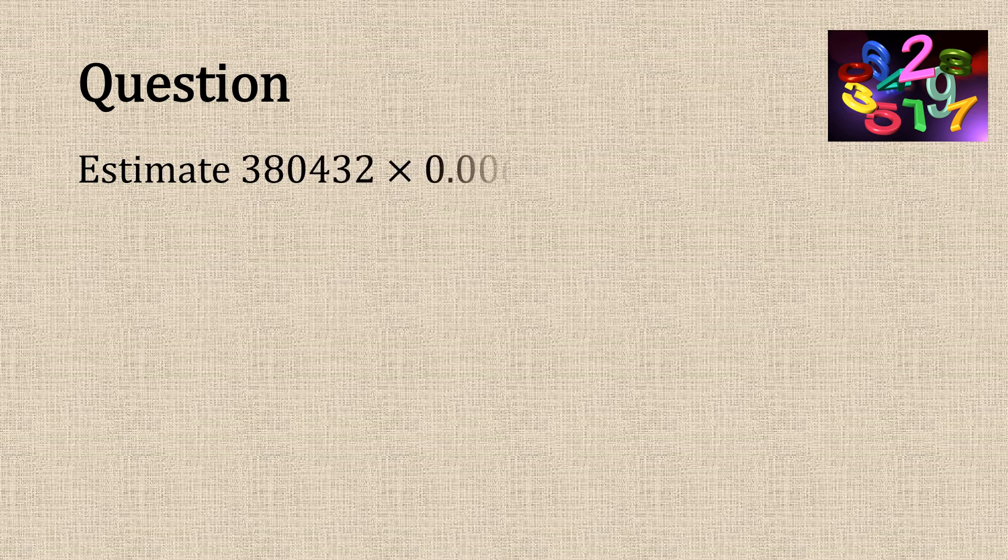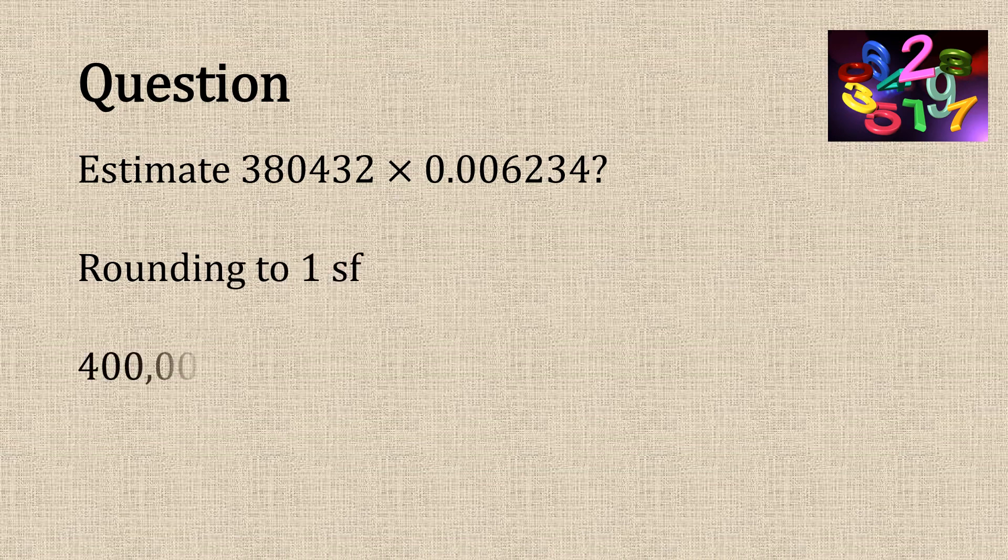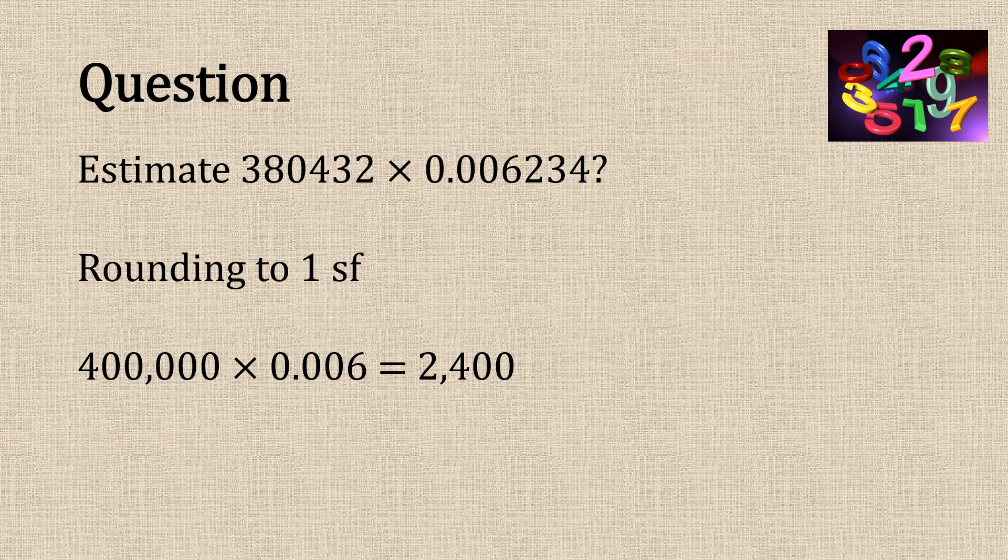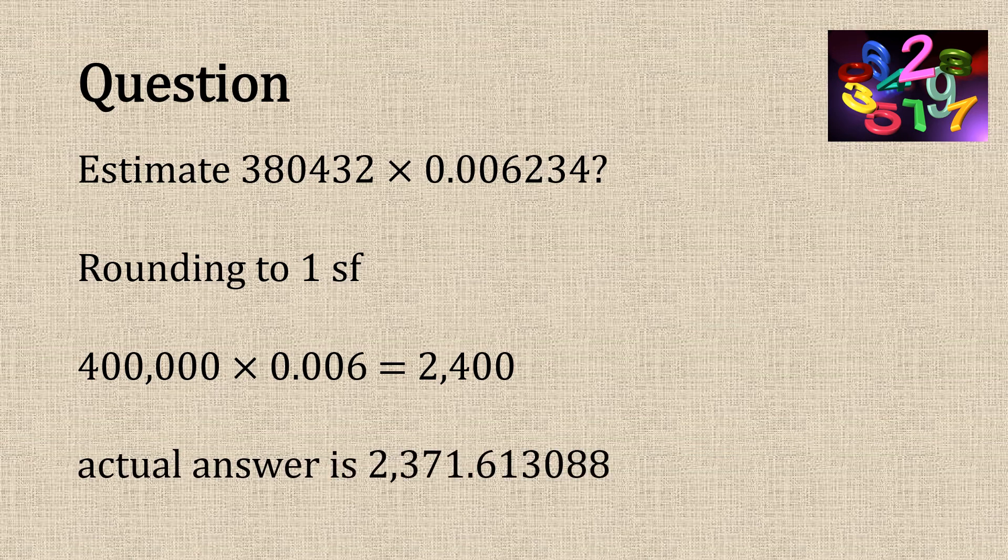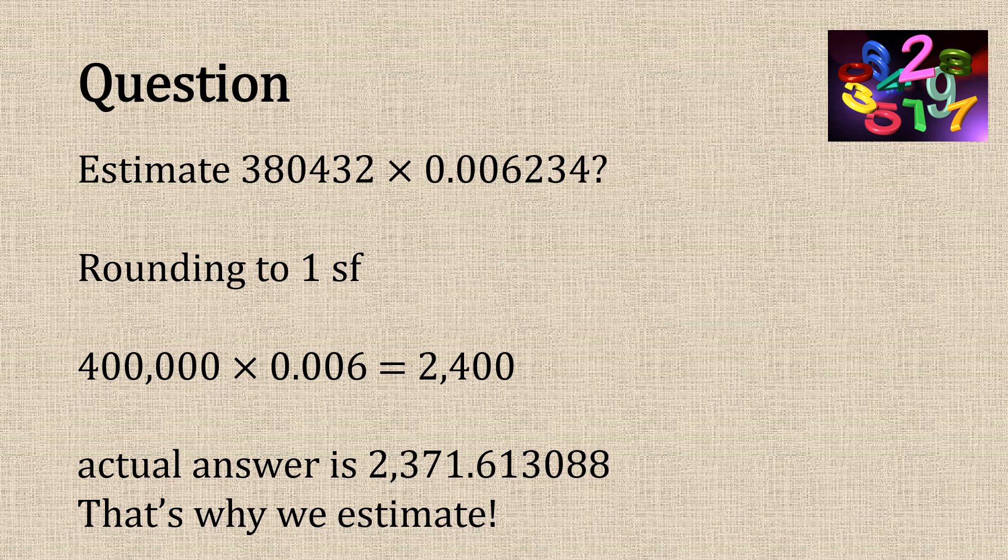Let's have a look at a question. Say you're asked to estimate this in an exam paper rounding to one significant figure. So we would write that as 400,000 times 0.006, which equals 2,400. And the actual answer is this. So that is a good reason why we would round up and estimate using significant figures.